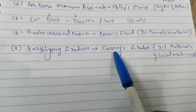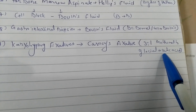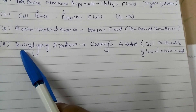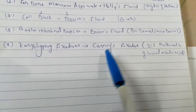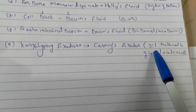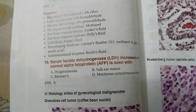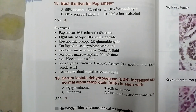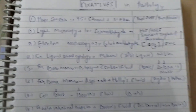For karyotyping, we use Carnoy's fixative, which is a 3:1 ratio of methanol to glacial acetic acid. There is no specific mnemonic — you can simply remember K and C for Carnoy's fixative. You can take a screenshot of this list to remember the fixatives and also a screenshot of the mnemonics.